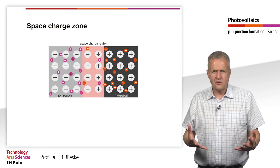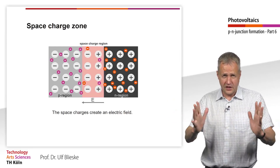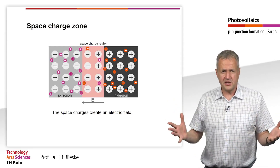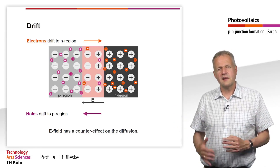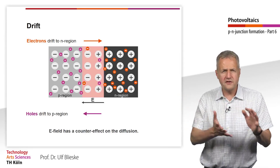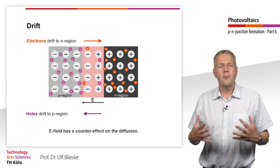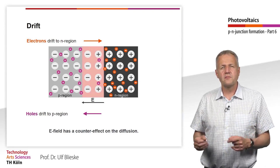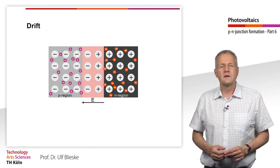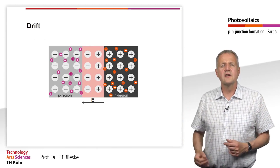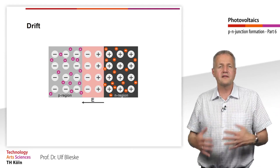The negatively charged zone at the border of the P region and the positively charged zone at the edge of the N region together form the space charge region. Due to the space charge, an electrical field is created. The electrical field creates a force opposite to the diffusion. The charge carriers drift back to the region where there are majorities — the electrons drift back to the N region and the holes back to the P region. As a result, there are hardly any free charge carriers in the space charge region, as they are immediately transported away from the area by the electrical field.